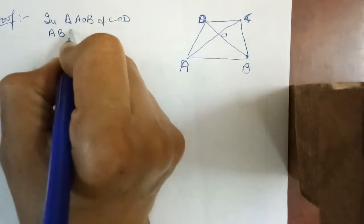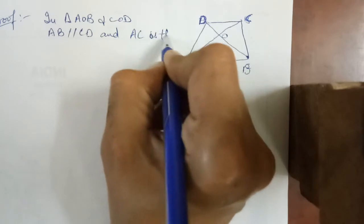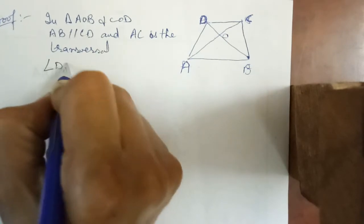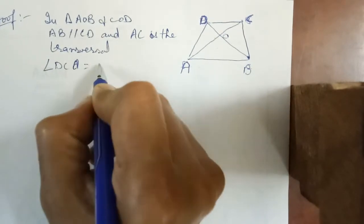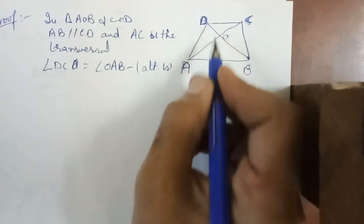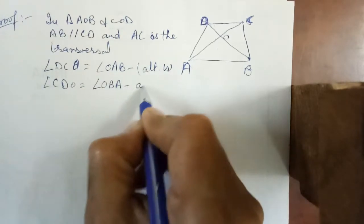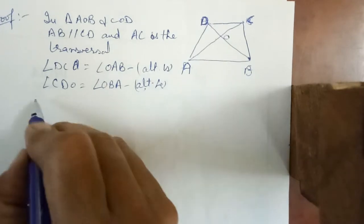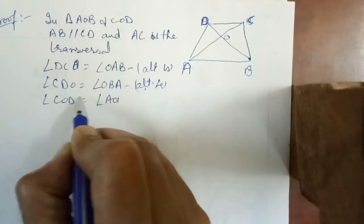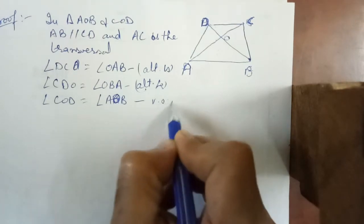AB is parallel to CD. Since AC is a transversal, angle DCO is equal to angle OAB — these are alternate angles. Similarly, angle CDO is equal to angle OBA — these are also alternate angles. And angle COD is equal to angle AOB — these are vertically opposite angles.